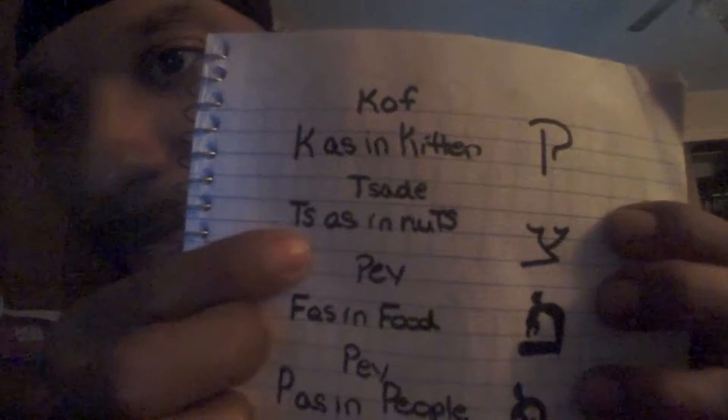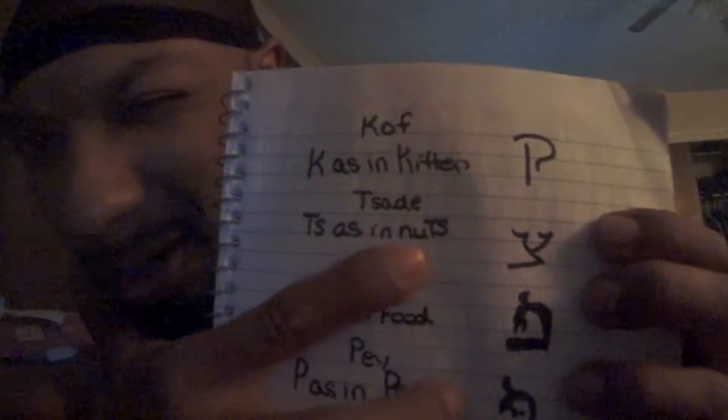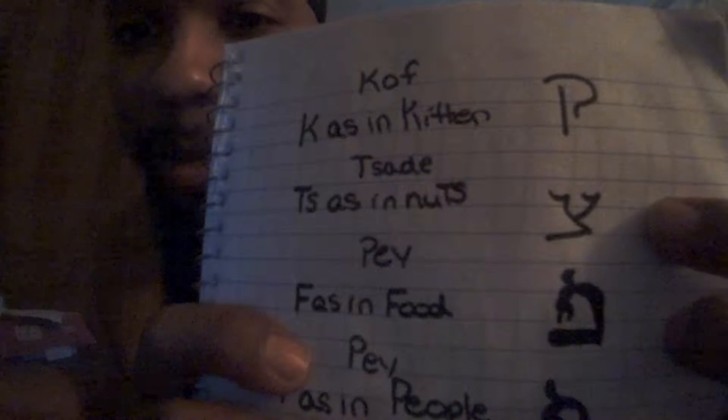The next letter is the Tsadi. It actually gives the TS sound, as in the end of the word 'nuts.' The Tsadi looks like a Y — that's all I can say about it.